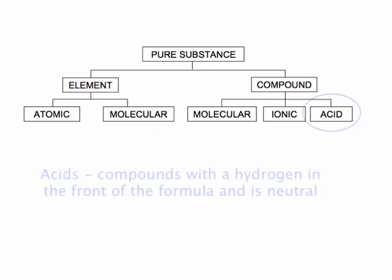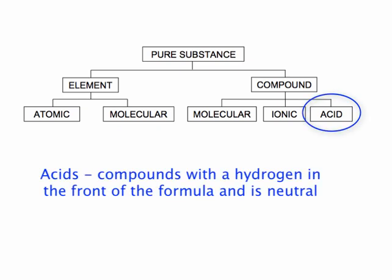And lastly, we have acids. Acids are substances that has a proton, in the case hydrogens, that can be given off. And these hydrogens are in the front of the compound formula, and they have no charge. And so that is the distinguishing feature of acids.